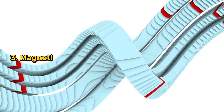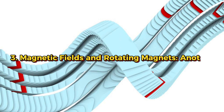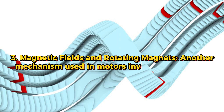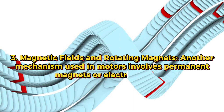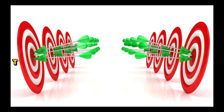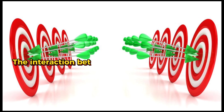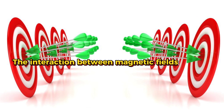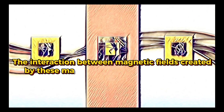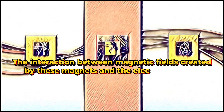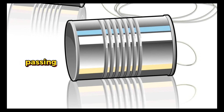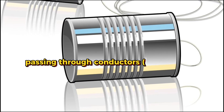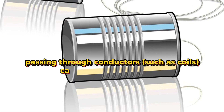3. Magnetic Fields and Rotating Magnets. Another mechanism used in motors involves permanent magnets or electromagnets. The interaction between magnetic fields created by these magnets and the electric currents passing through conductors, such as coils, causes rotational motion.